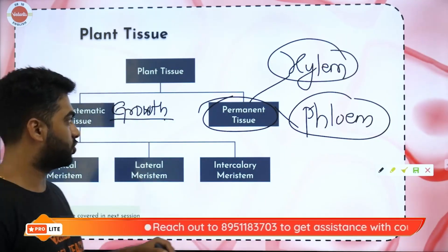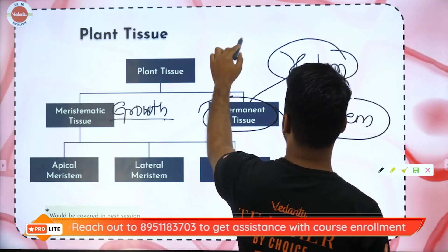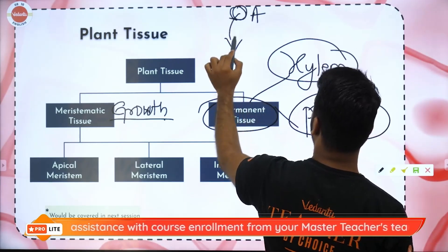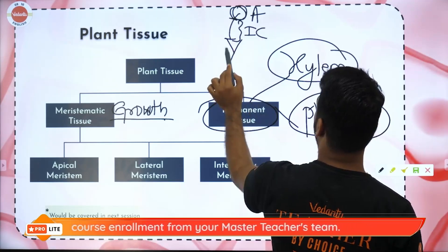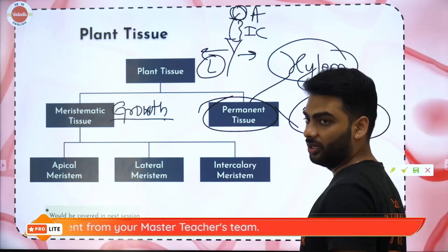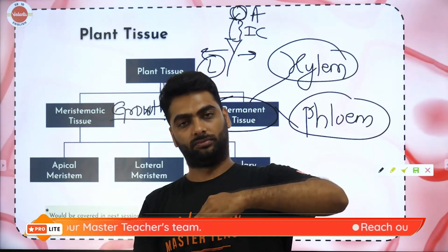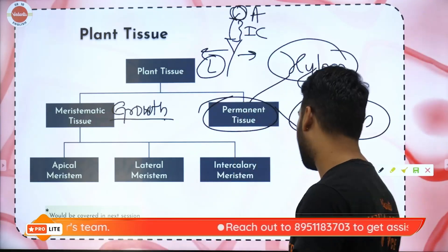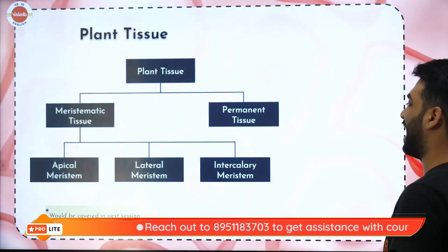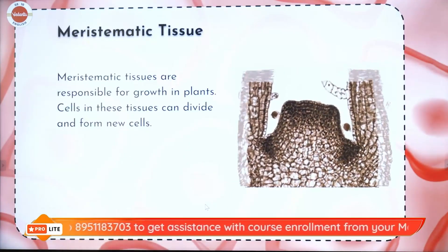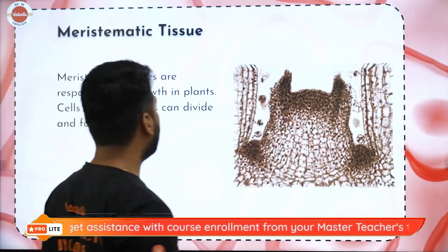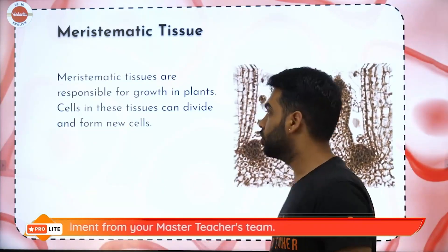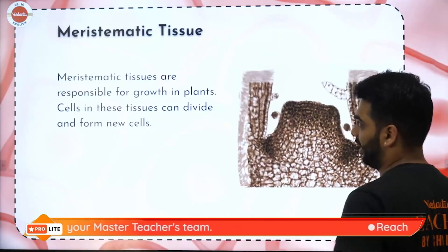When I talk about meristematic tissues, suppose if I draw a plant: here on the tip I have got apical, here I have got intercalary, and here I have got the lateral. Lateral grows the plant in width, apical grows the plant in length, and between the nodes there is the intercalary tissue which gives rise to different buds and branches. Meristematic tissues are responsible for growth — they can divide and form new cells, so the other name for meristematic is the dividing tissues, whereas permanent are the non-dividing ones.